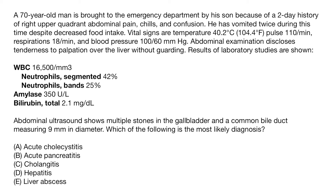On to our final question. A 70-year-old man is brought to the emergency department by his son because of a two-day history of right upper quadrant abdominal pain, chills, and confusion. He has vomited twice despite decreased food intake. Vital signs include a temperature of 104.4°F (fever), pulse of 110, respirations of 18, and blood pressure of 100 over 60. Abdominal exam shows tenderness over the liver without guarding. Labs show a white blood count of 16,500 (elevated), amylase of 350 (elevated), and total bilirubin of 2.1 (elevated). Abdominal ultrasound shows multiple gallstones and a common bile duct measuring 9 millimeters in diameter, indicating it is enlarged.